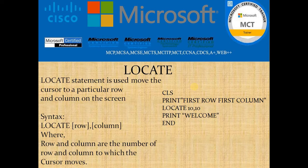The syntax is: LOCATE row, column — where 'row' is the row number and 'column' is the column number where you want to position your cursor. Looking at the example on the right-hand side: the first PRINT statement executes in the first row, first column as normal. After that, the LOCATE statement is used — before the next statement executes, it positions the cursor at row number 10, column number 10.